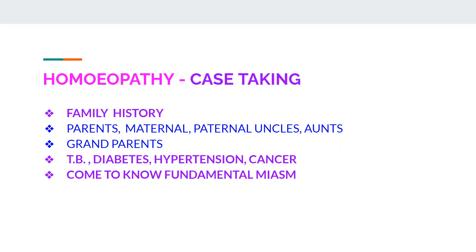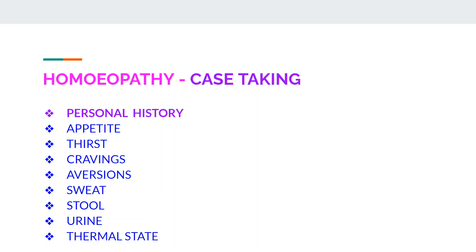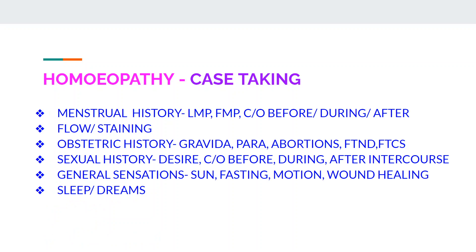Personal history is very important. Physical generals are assessed under appetite, thirst, cravings, aversions, perspiration, stool, urine, and thermal state. In females, menstrual history and obstetric history are most important. Sexual history, general sensations, and modalities are also noted. We specifically ask every patient whether they have aggravation from sun, whether fasting is not tolerated, problems during driving or traveling, and how wound healing is — whether delayed or normal. Data about sleep and dreams is also collected.